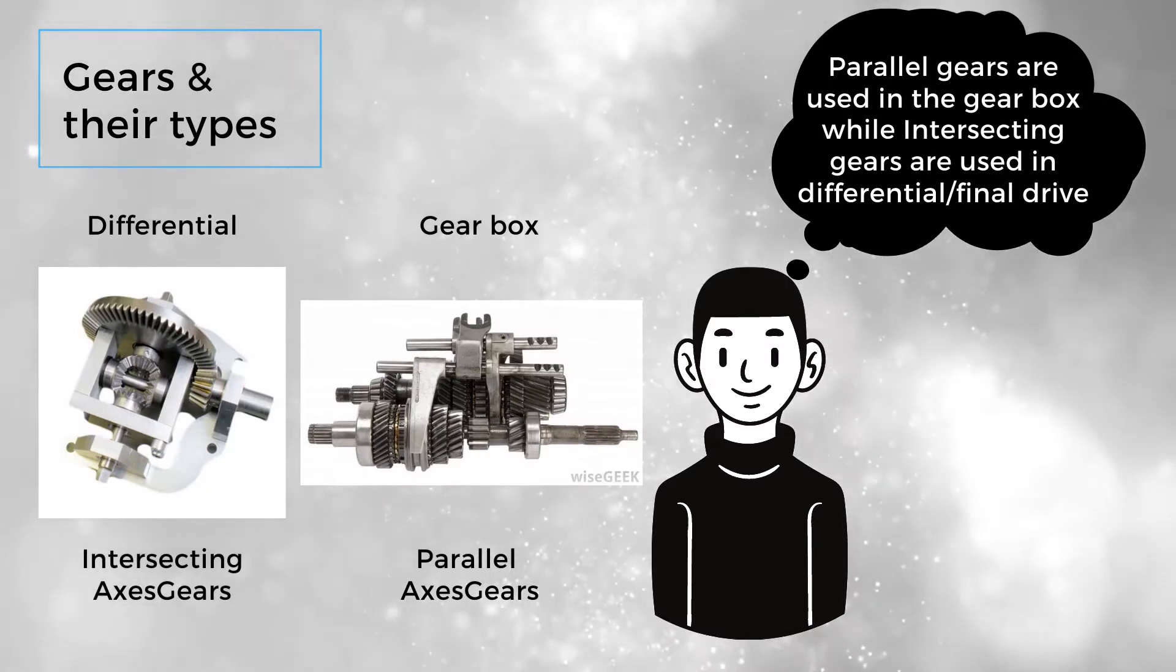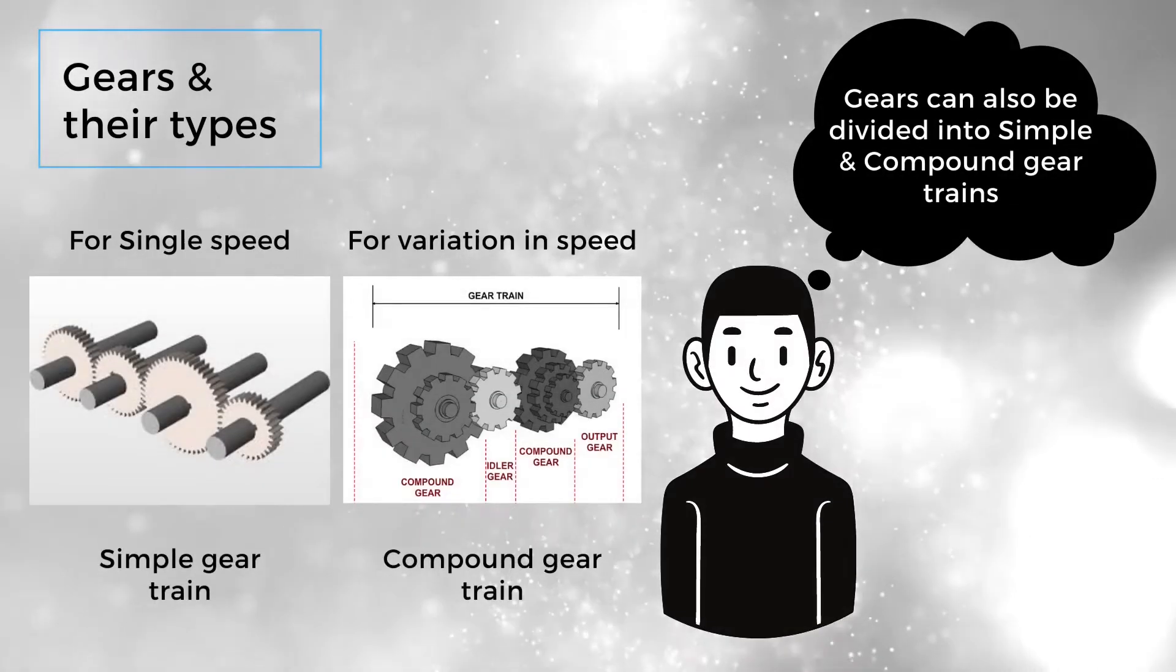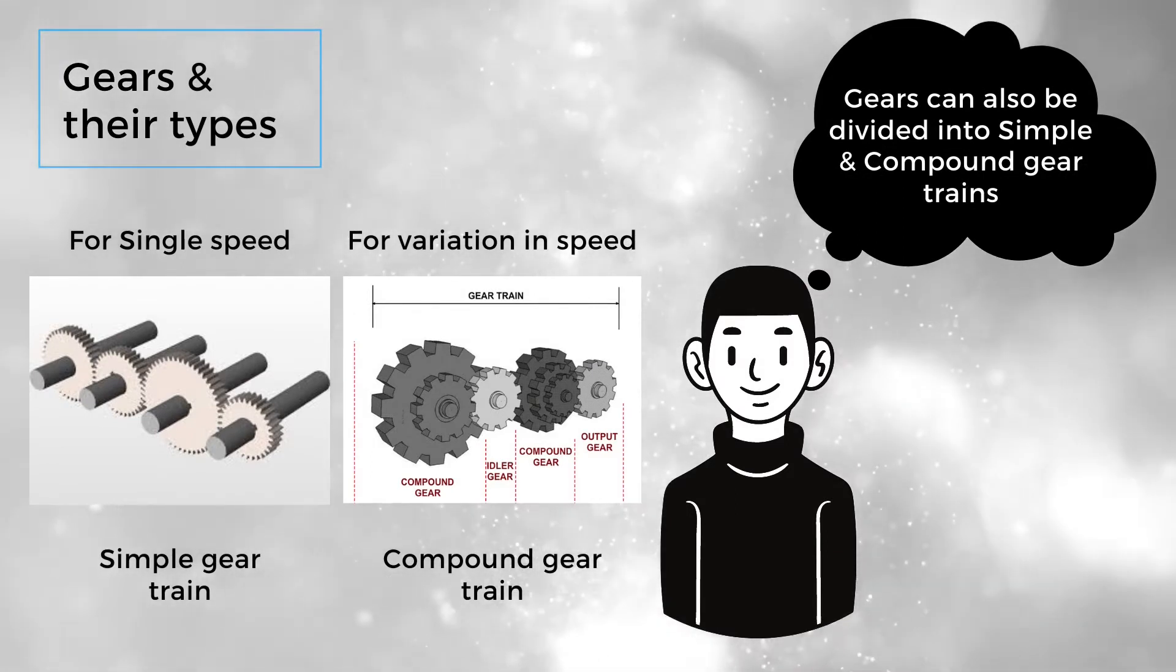Parallel gears are used in the gearbox, while intersecting gears are used in differentials or final drives. Gears can also be divided into simple and compound gear trains—simple gear trains for single speed and compound gear trains for variation in speeds.